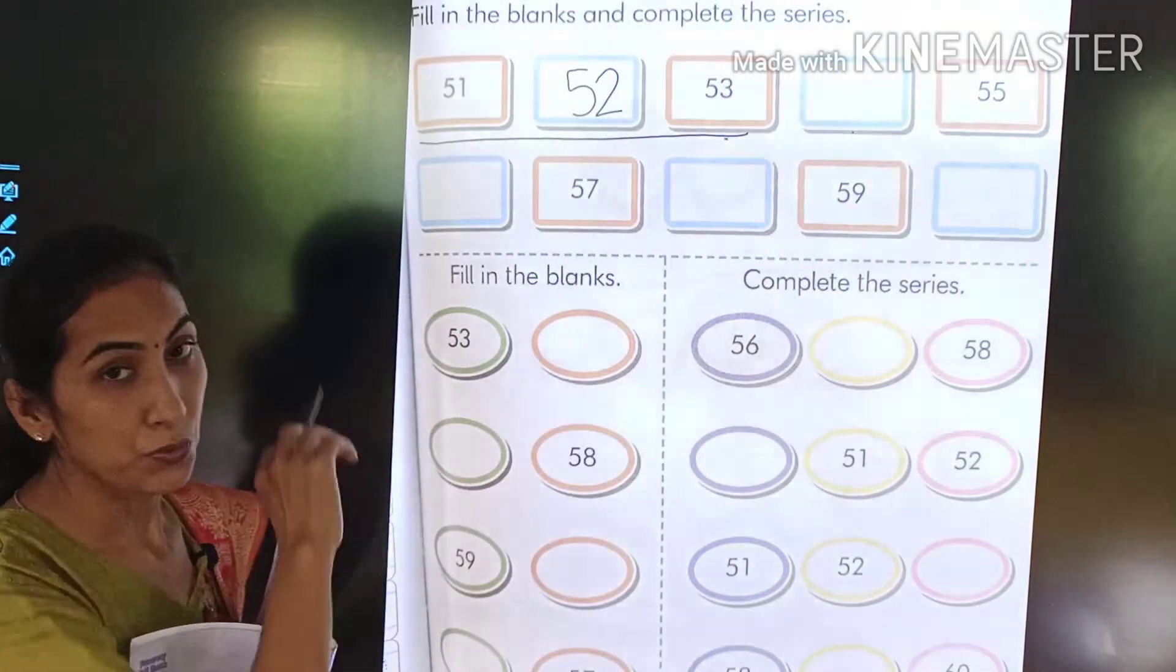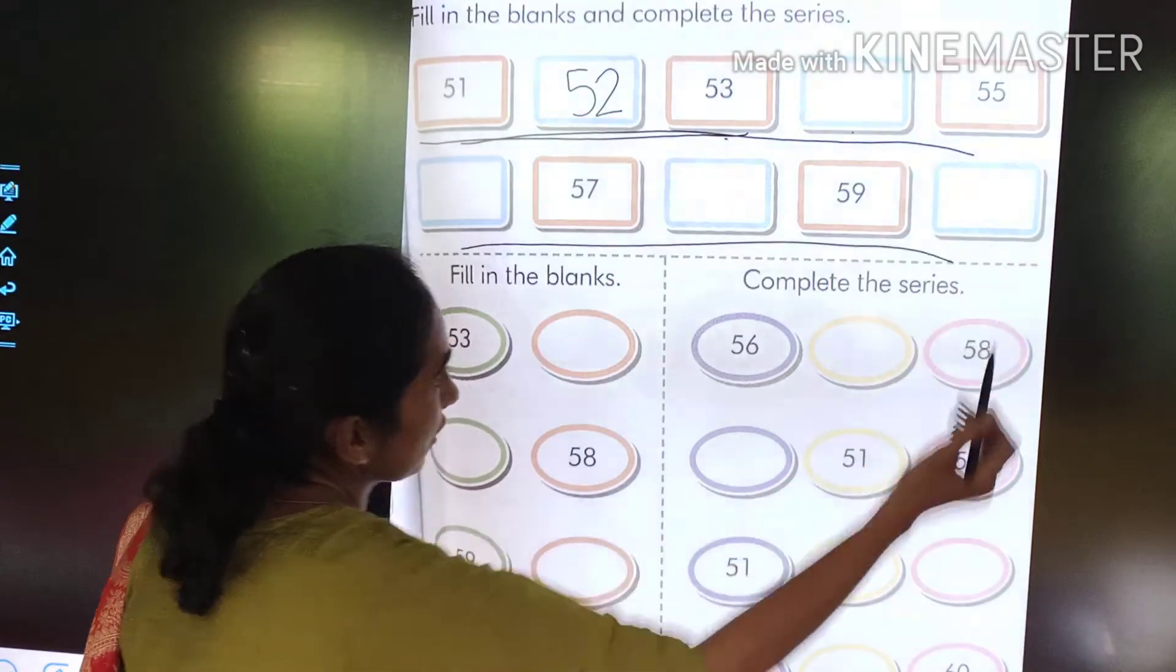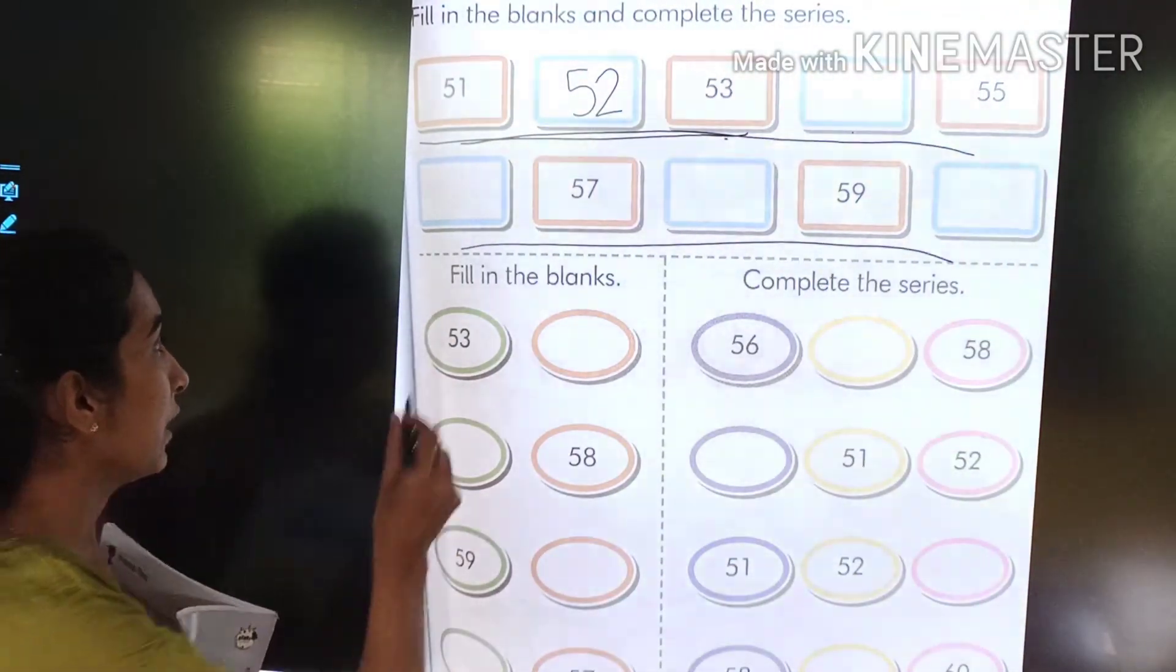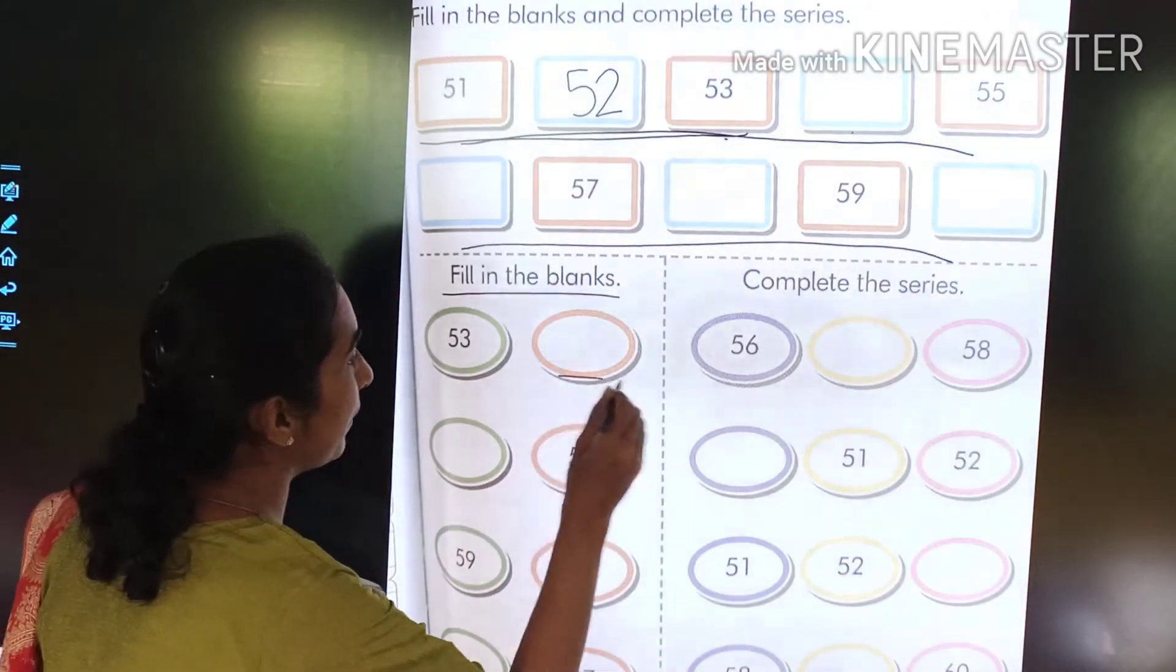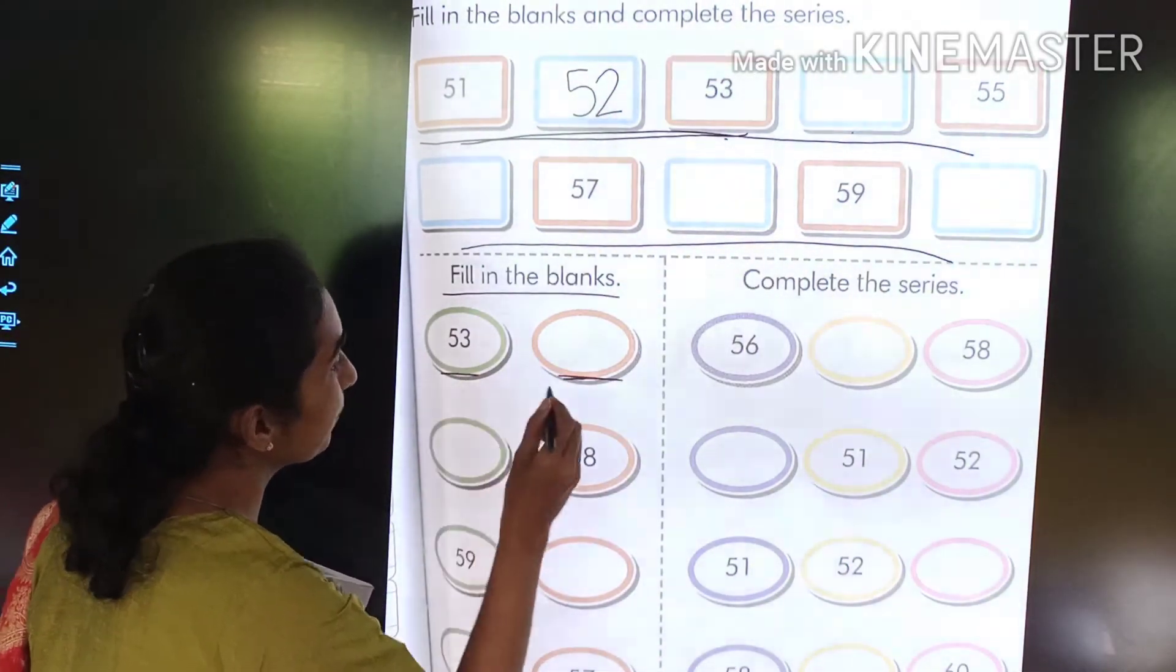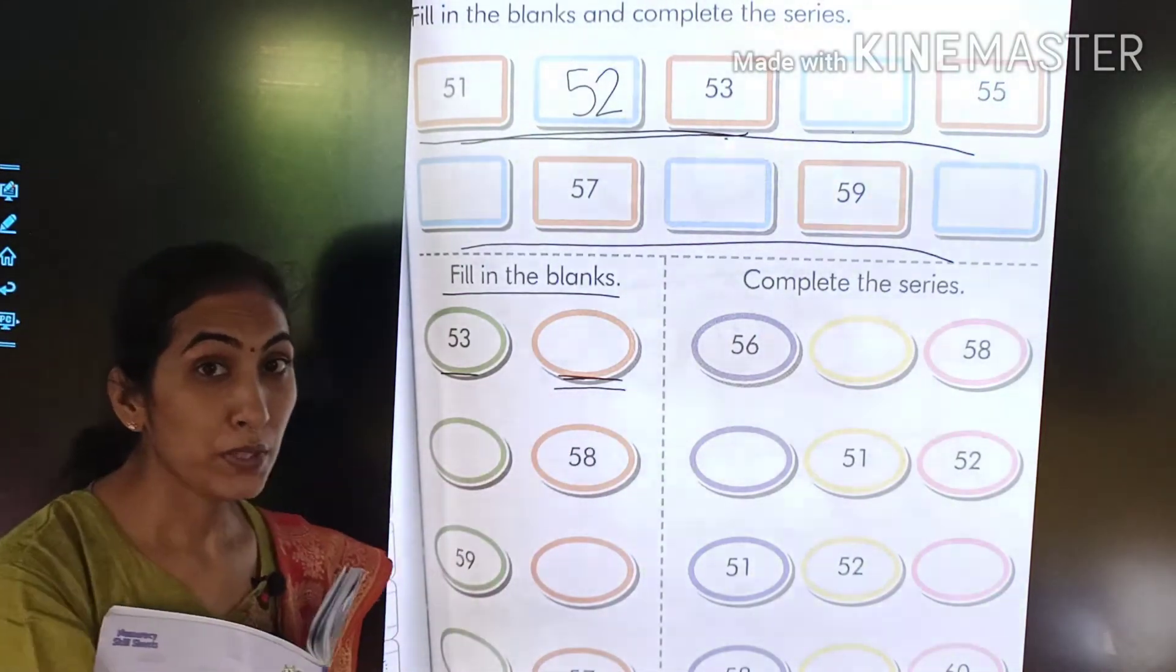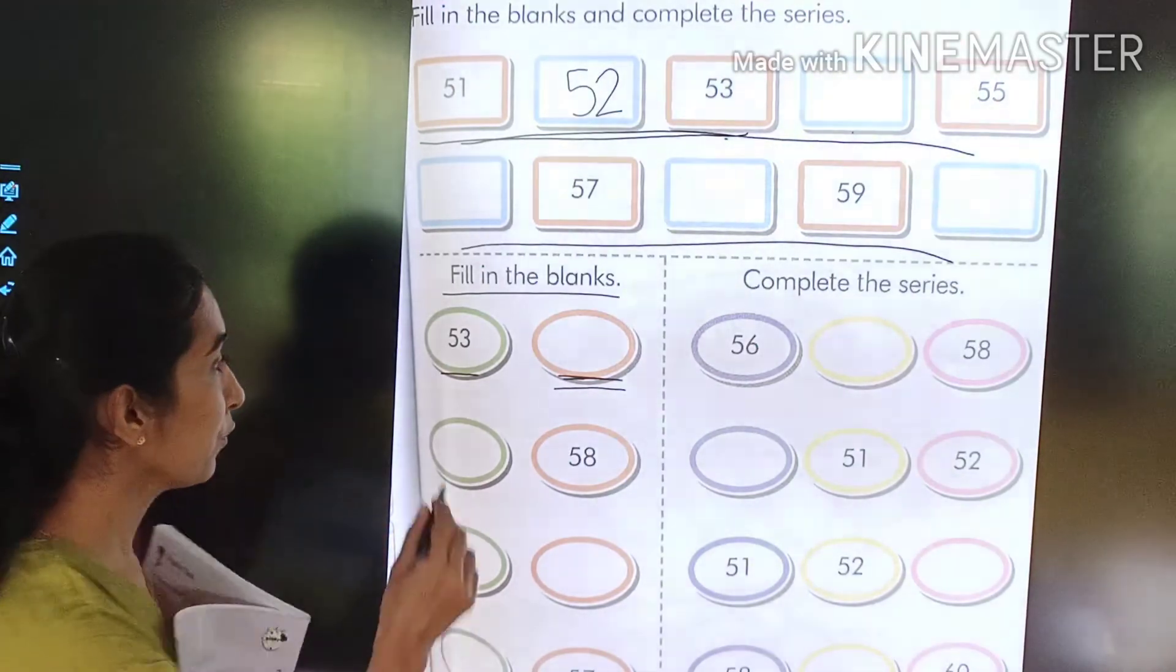Same way, 53, what comes after? So students, what you have to do, you have to complete this series. Now fill in the blanks. This is blank. See, 53. Before this is blank. What comes after 53?